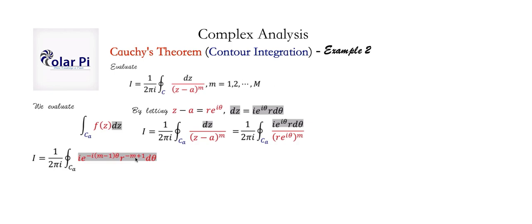When m equals 1, the exponent on e becomes 0, so e^0 = 1, and r^(1−1) = r^0 = 1. The integral reduces to the integral of i dθ from 0 to 2π, which gives 2πi. We had a factor of 1/(2πi) out front, so 1/(2πi) × 2πi = 1. Therefore, the integral equals 1 when m equals 1.